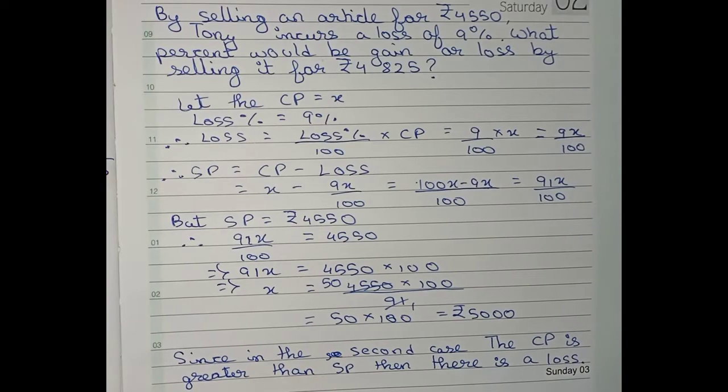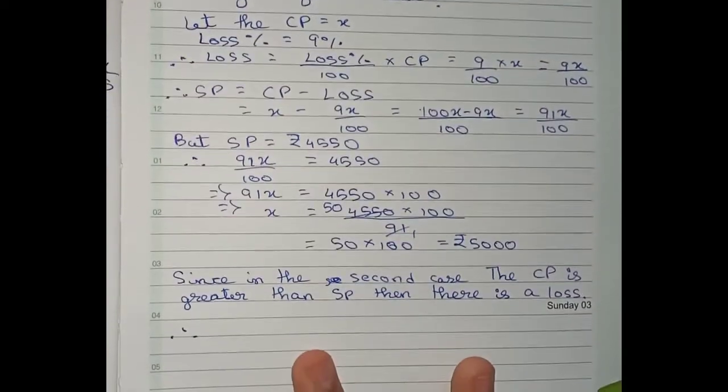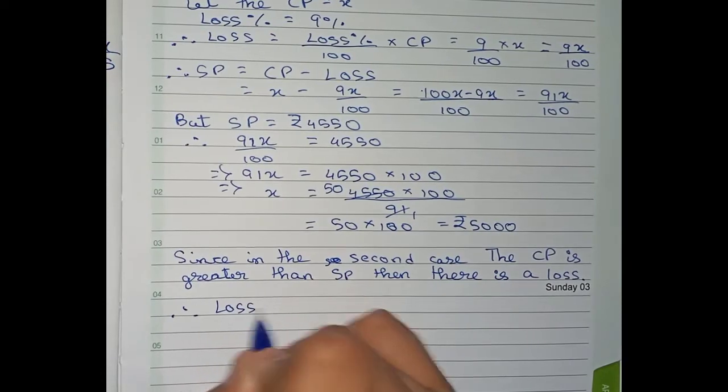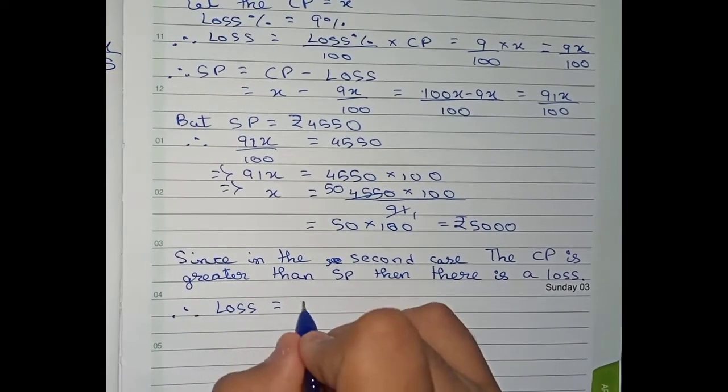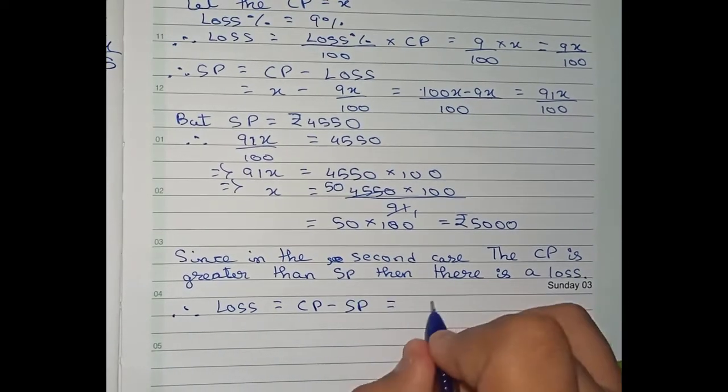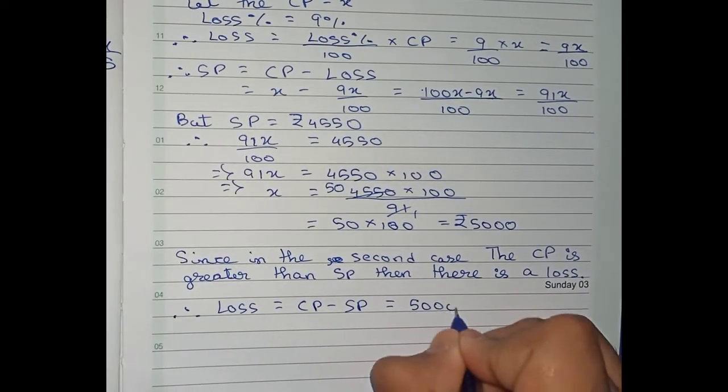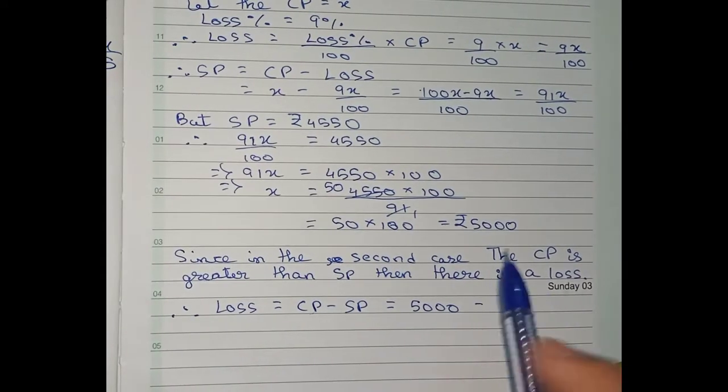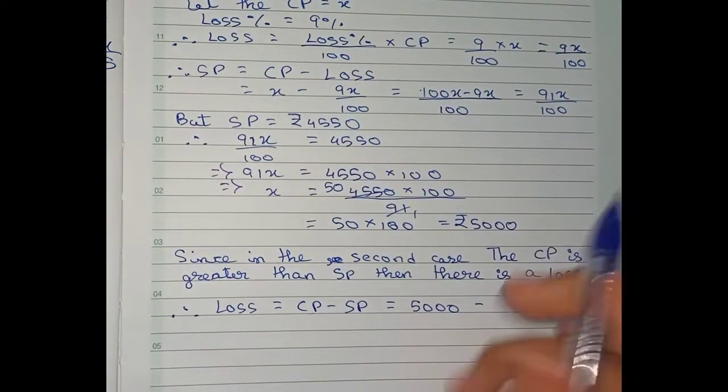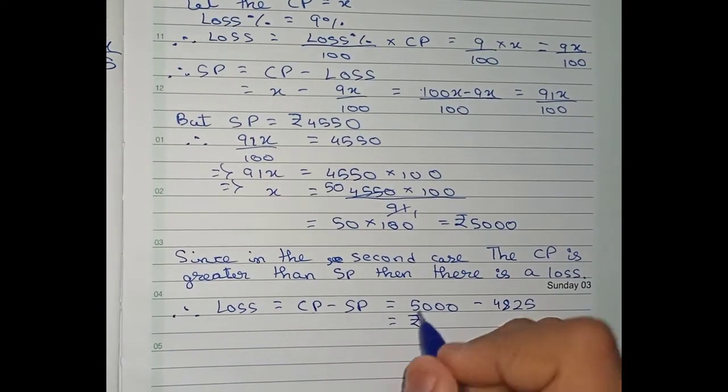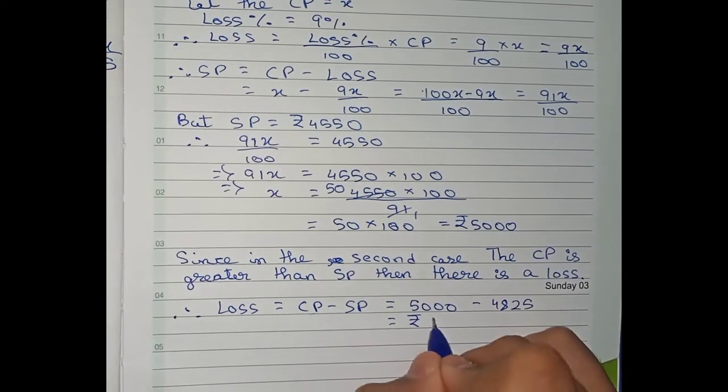So now we will find out the loss percentage. For that first you have to find the loss amount. Loss amount will be CP minus SP. So that is 5000, our CP, minus the SP in the second case, that is 4825. So that is equal to Rs. 175.